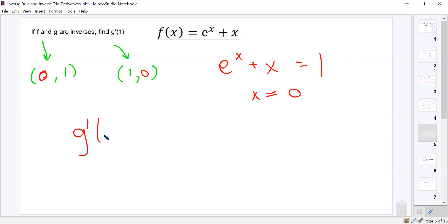And so, what should g prime of 1 be the same as? g prime of 1 should equal 1 over f prime of 0. And all we need to do is find f prime of 0. What's the derivative of f? It should be e to the x plus 1. And we'll evaluate that at x equals 0 to get what? Hopefully, 2. So, g prime of 1 equals 1 over 2. Good or no?